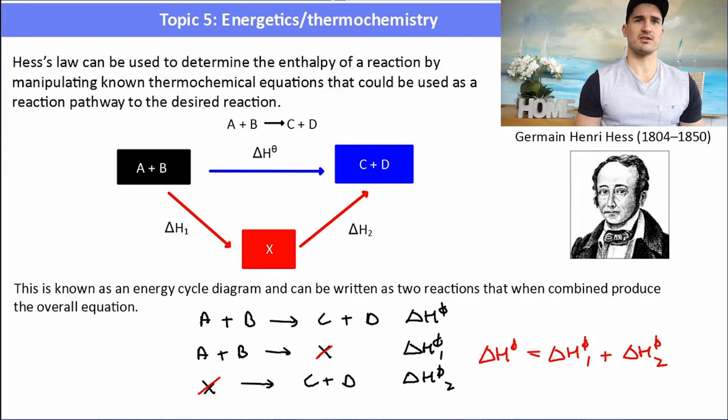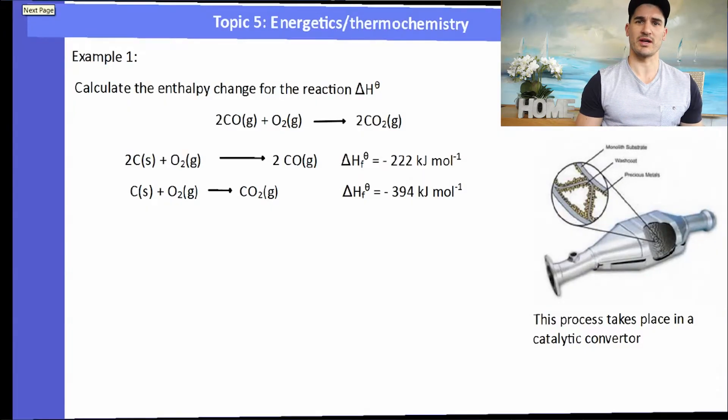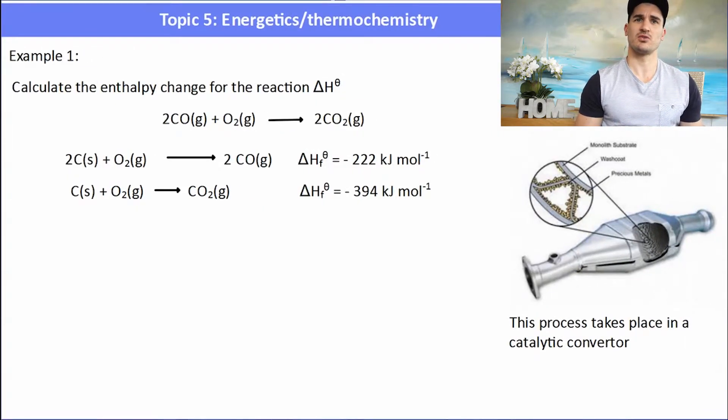So we can use Hess's law to come up with a series of equations and then put them together to work out the overall delta H. So here's a reaction where we have to find the delta H. And we're given two equations and we need to use those equations to figure out the overall delta H. Now the best way of doing it is looking at where the reactants and the products are. So CO is on the right hand side of the first equation and O2 is on the left hand side of the second equation. The CO2 is on the right hand side of the second equation.